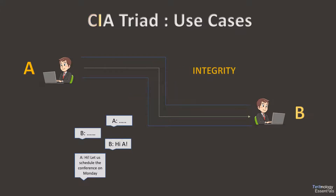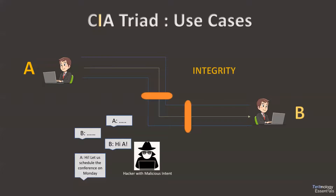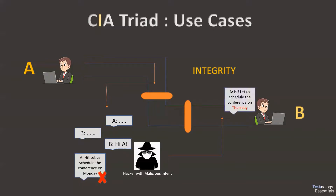In this case, let us consider the hacker decides to alter the message sent from A to B. He intercepts the channel and sends an altered message to B, which A is unaware of. Hence the message's integrity is lost.